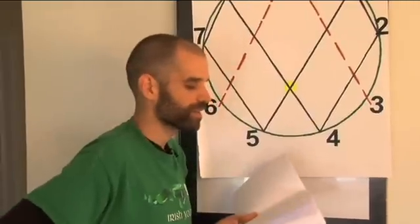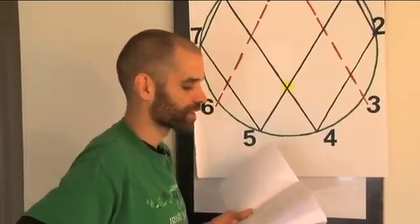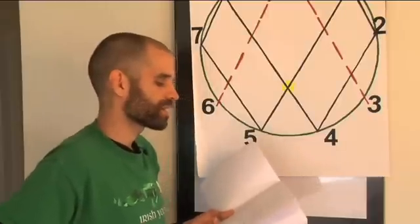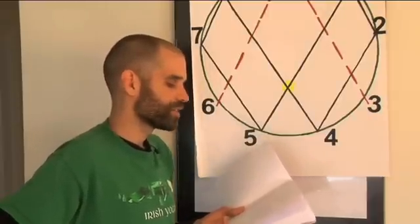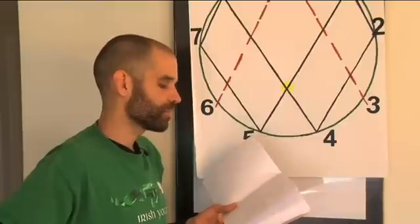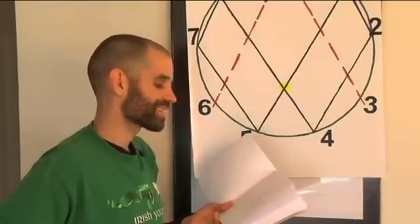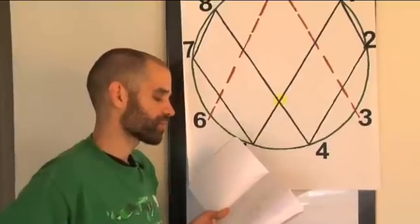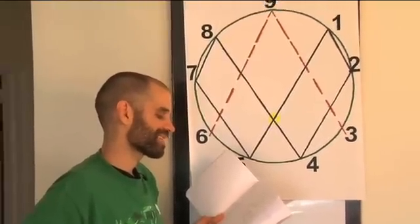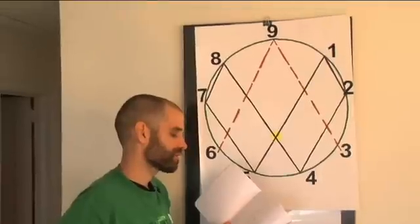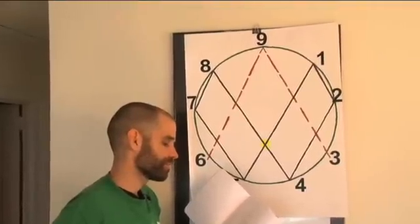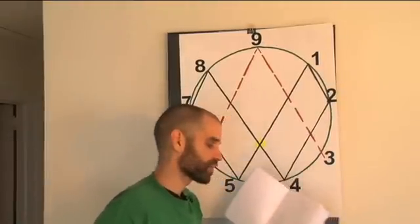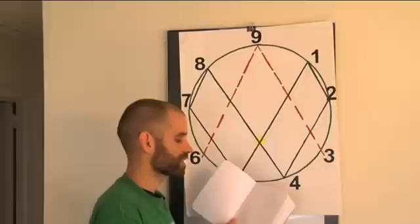The same thing is going to happen when I divide by 6 backwards. Now, don't be worried if you're losing me a little here. I'm about to explain this. 1 divided by 6 is 8, 2 divided by 6 is 2, 3 divided by 6 is 0.5 which is 5, 4 divided by 6 is 4, 5 divided by 6 is 7, 6 divided by 6 is 1, 7 divided by 6 is 9, 8 divided by 6 is 3, 9 divided by 6 is 6.